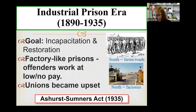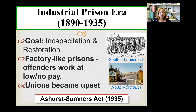Think about this: you have inmates who work for free or very low wages, so all these companies wanted inmates to do their work because they didn't have to pay regular workers. Unions became very upset — law-abiding people looking for jobs couldn't find them because companies could use forced prison labor for free. There was a big push against it by unions, and Congress ended up passing what's called the Ashurst-Sumners Act, which said you cannot transport any goods or services created by prison labor across state lines. This basically brought an end to the industrial prison era.